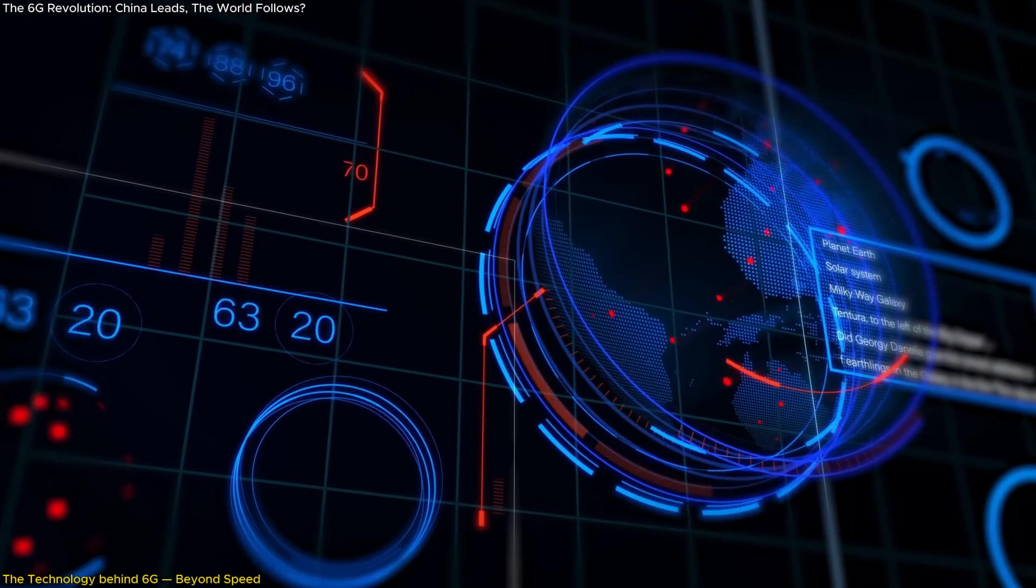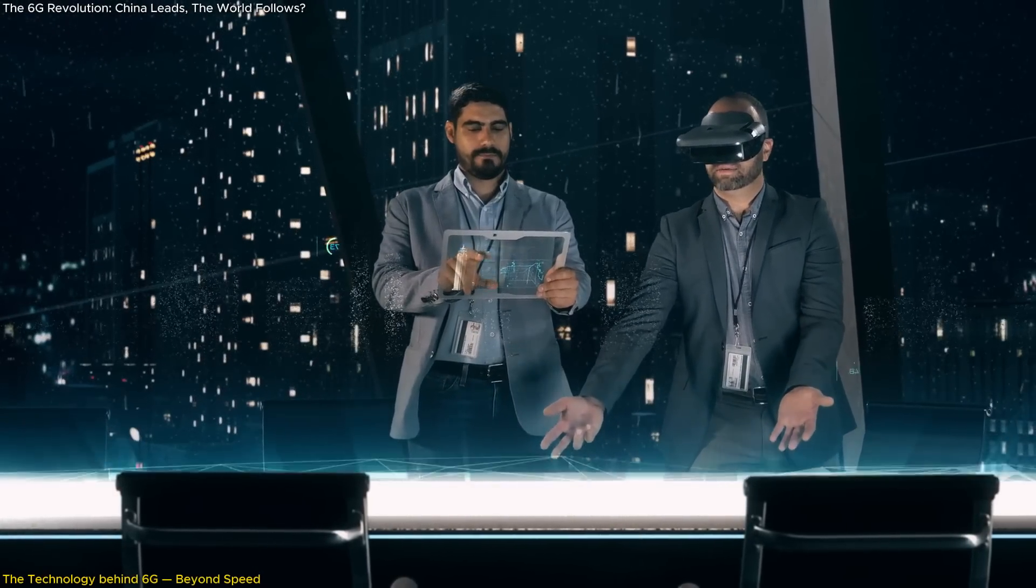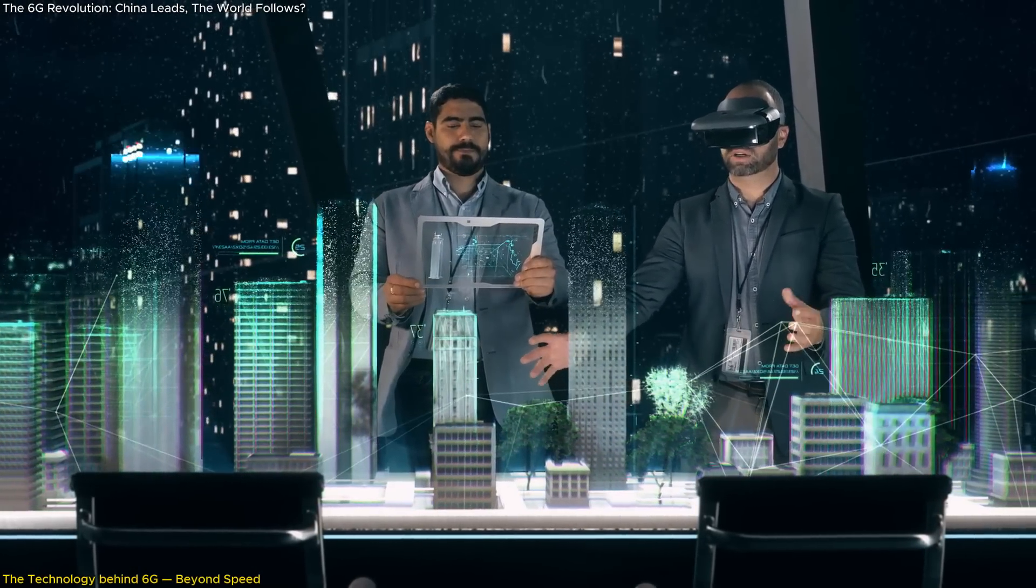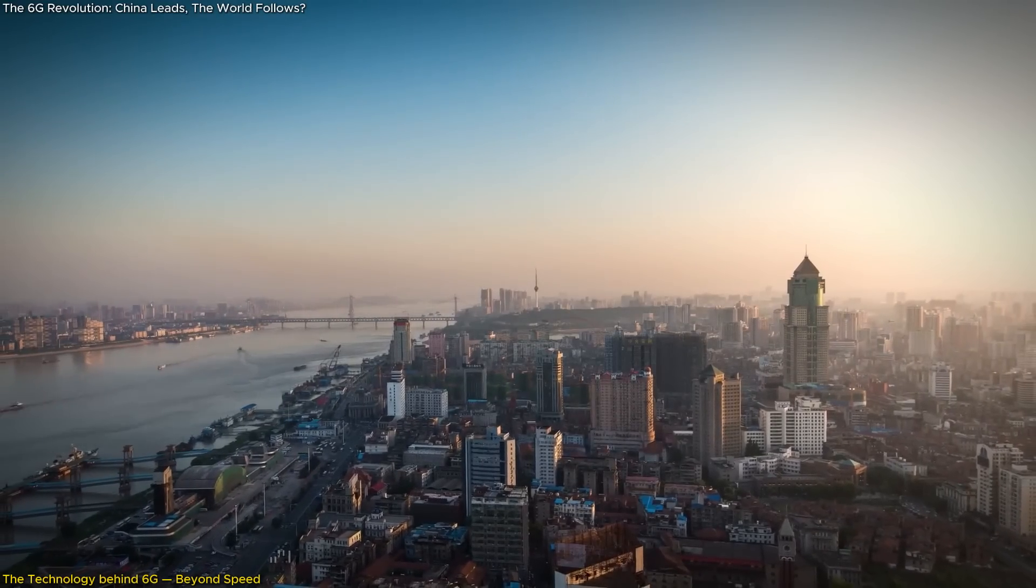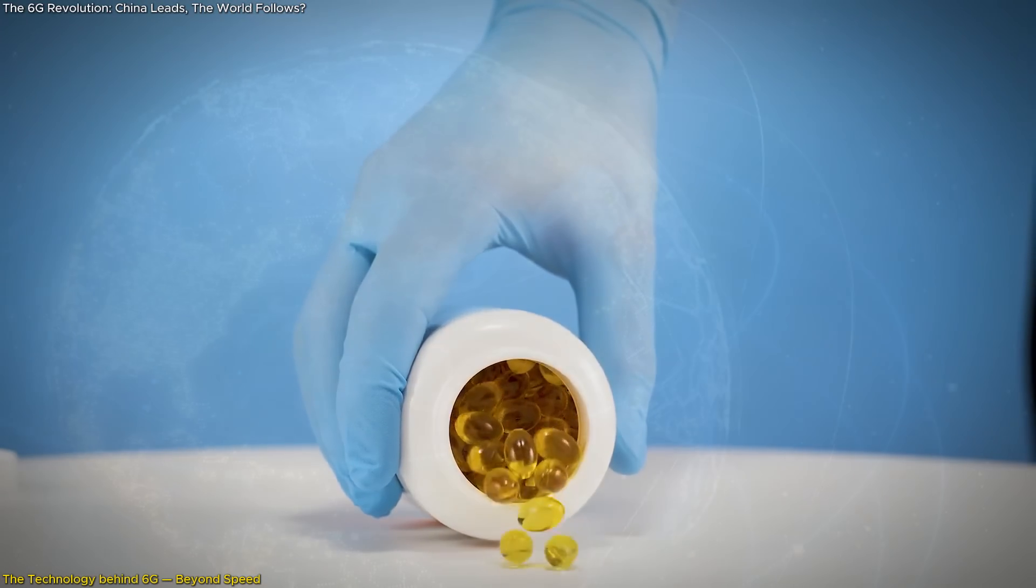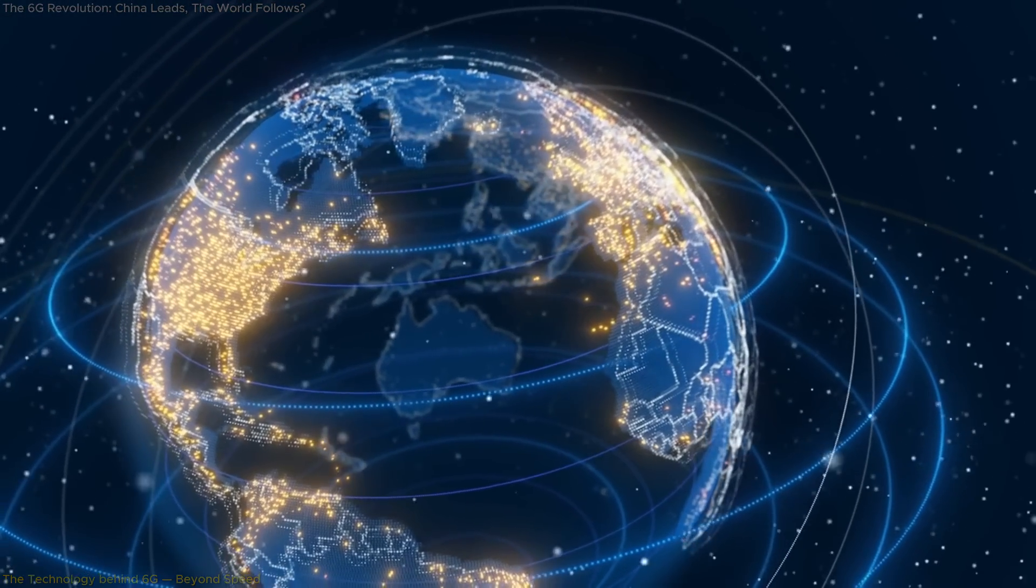There's also talk of digital twins, virtual representations of physical objects updated in real-time through 6G sensors. This can revolutionize fields from urban planning to medicine, creating models so precise they mimic reality.